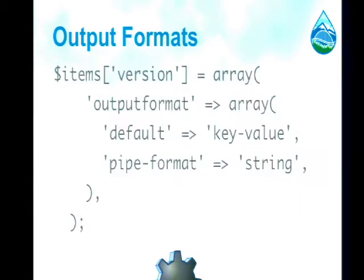Here's an excerpt of the command definition for the version command — it just tells you what version your Drush is. In addition to saying what arguments and options your command supports, you have a new array key called 'output formats'. It has two elements: the default and the pipe format. Default tells Drush how to output data if someone doesn't specify a format — in this case, key-value format.